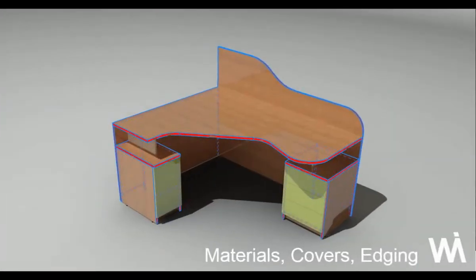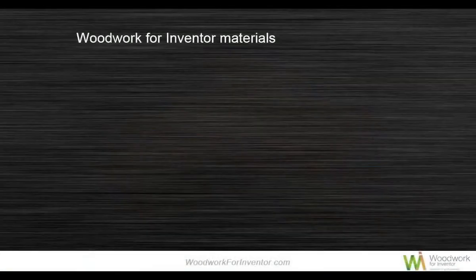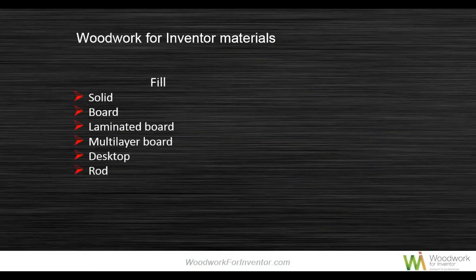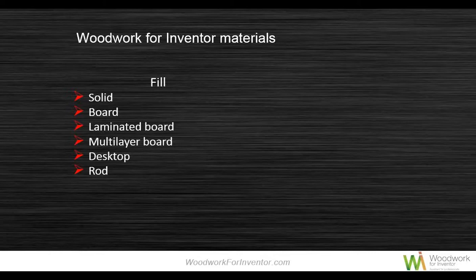Let's look at the materials — covers and edge banding. We have different fill types as categories: solid board or solid piece timber, board, laminated board, multi-layer boards, a type for desktops, and the rod type for any extrusion — aluminium extrusion, architrave — it's not limited to timber. This gives you the ability to split that information out into the spreadsheet. The covers address veneering, edge banding, and painting separately within the package.